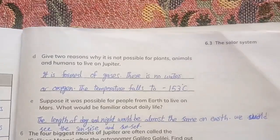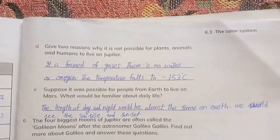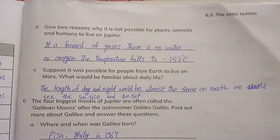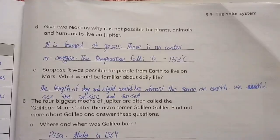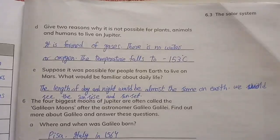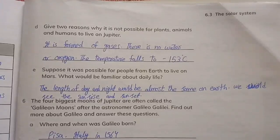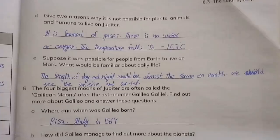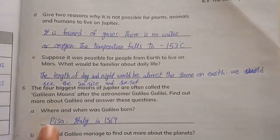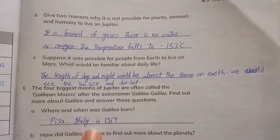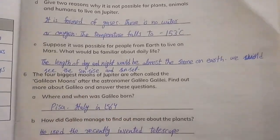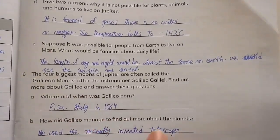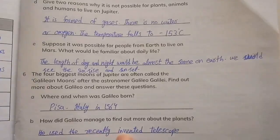The four biggest moons of Jupiter are often called Galilean moons after the astronomer Galileo Galilei. Find out more about Galileo and answer the questions. Where and when was Galileo born? Pisa, Italy in 1564. How did Galileo manage to find out more about the planets? He used a recently invented telescope.